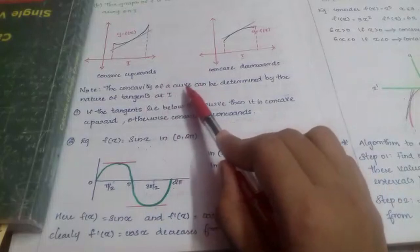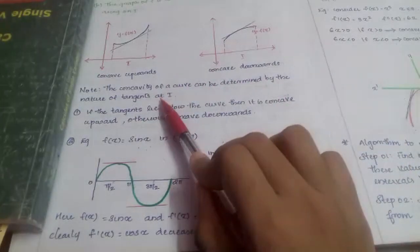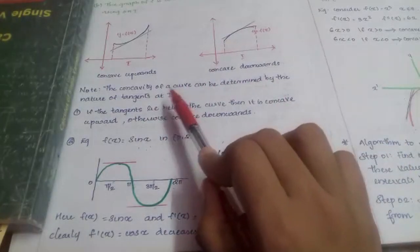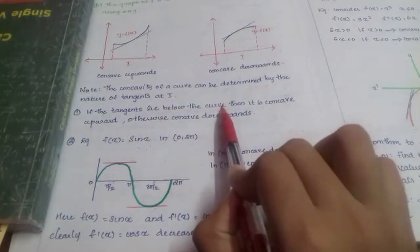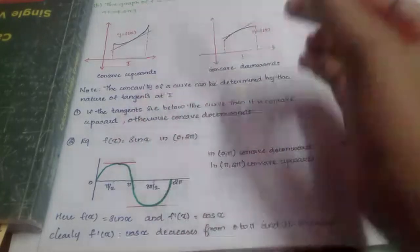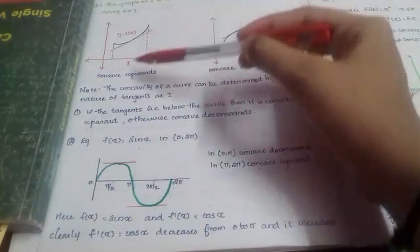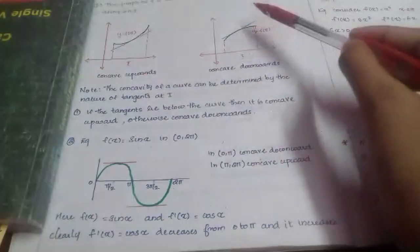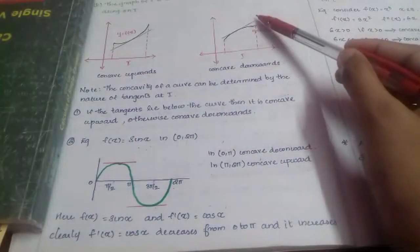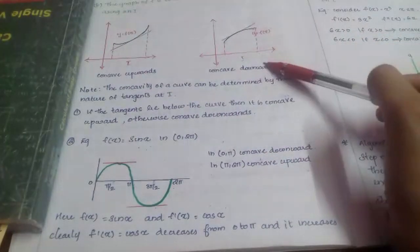The concavity of a curve can be determined by the nature of tangents. If the tangent lies below the curve, then it is concave upward. If the tangent lies above the curve, then it is concave downward.